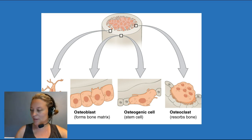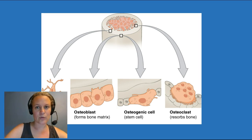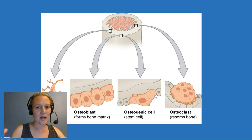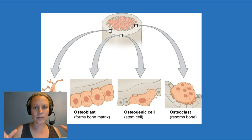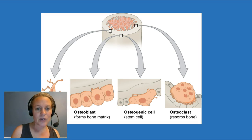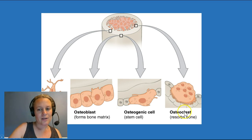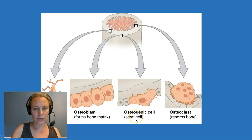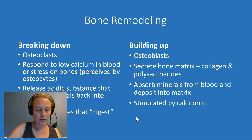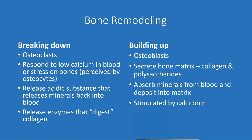The next thing we need to talk about is the different types of cells in bone and how we go about the remodeling process. Osteocytes are the cells that hang out in the osteons — those are the semi-permanent resident cells. We also have specialized cells that both break down and build up the bone: osteoclasts, which break down or resorb bone, and osteoblasts, which form or lay down new bone. And of course stem cells, which help regenerate different types of osteocytes.